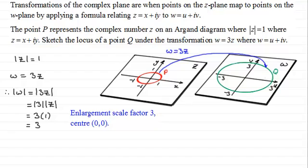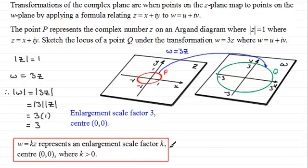This is always the case. We have this general definition that if w equals a constant k times z, then it represents an enlargement, scale factor k, centre the origin, where k is greater than 0.